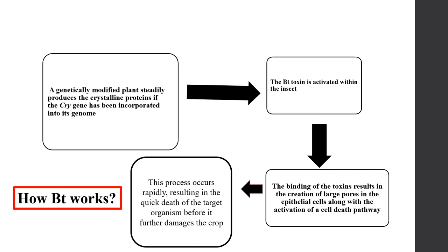This is how Bt works. A cry gene is introduced into the plant, the plant produces the cry protein along with all its metabolic processes. When an insect infects that plant, it eats the plant as well as the cry protein formed by the plant's metabolism, and as a result, the insect dies and the crop is safe.